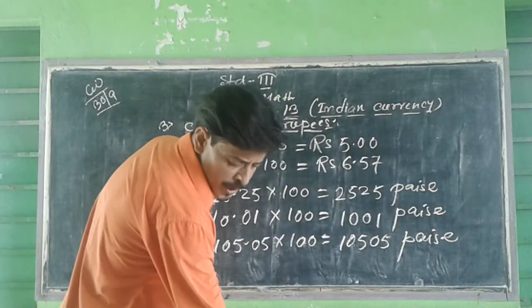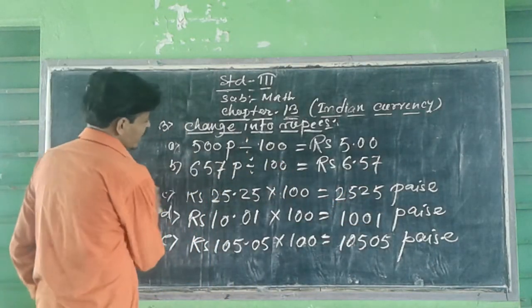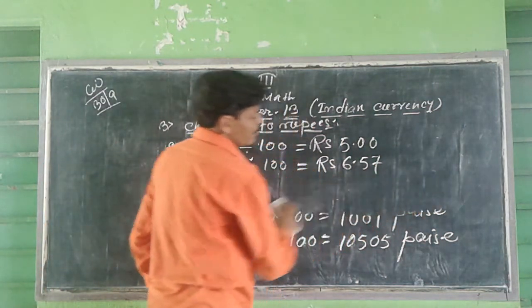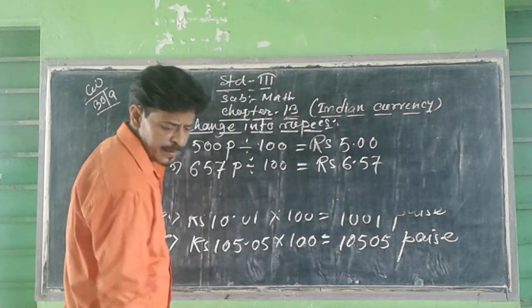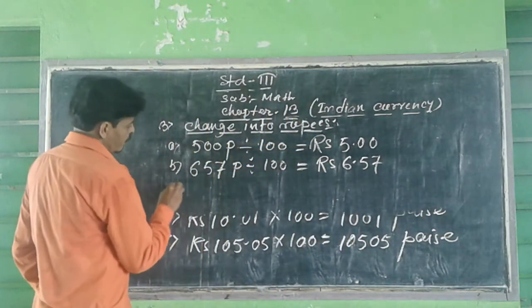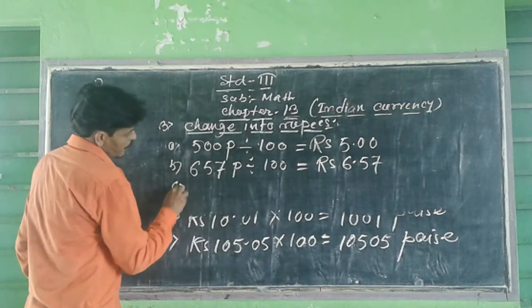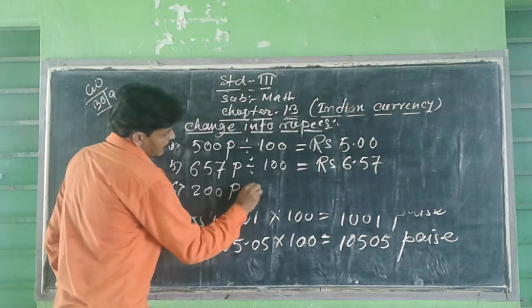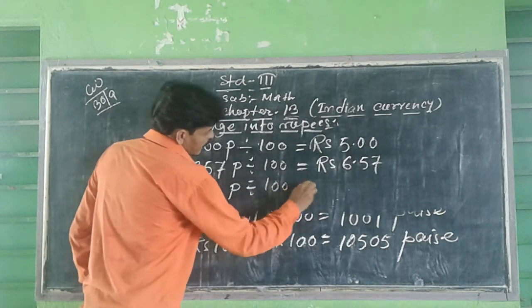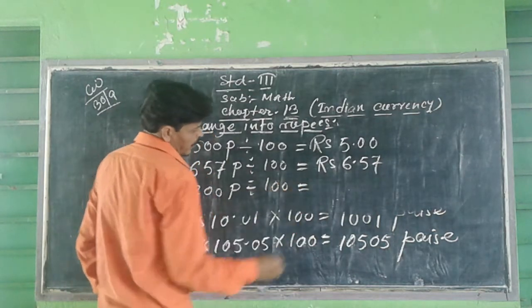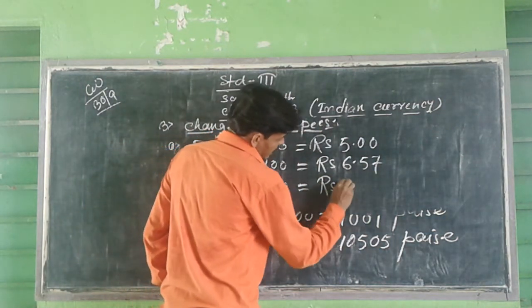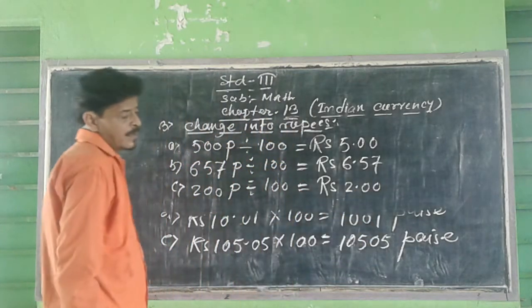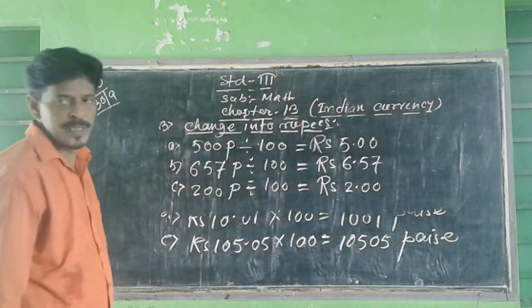Question Number 3c: 200 paise divide by 100 equal to Rupees 2.00. That means Rupees 2.